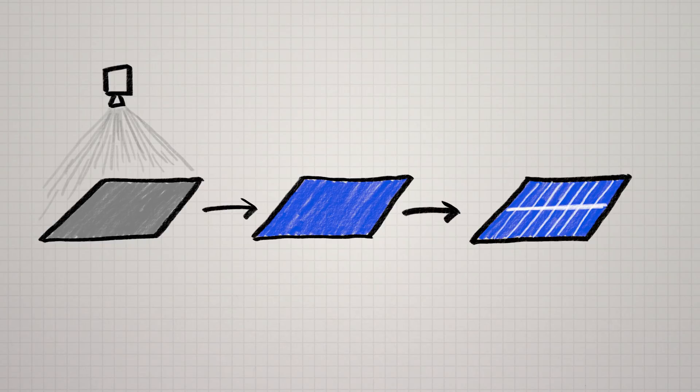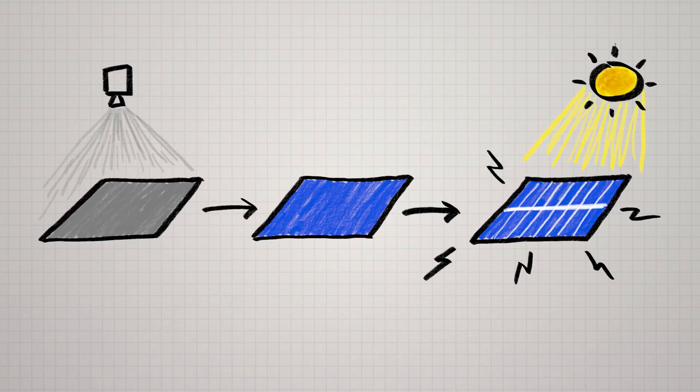Then the wafers get covered with other metals, anti-reflective coatings, electrodes, and so on, to be able to capture the sun's energy. But the part we want to focus on is the cutting.